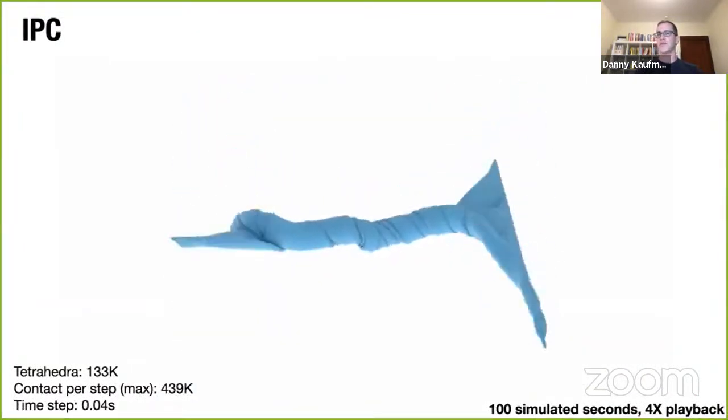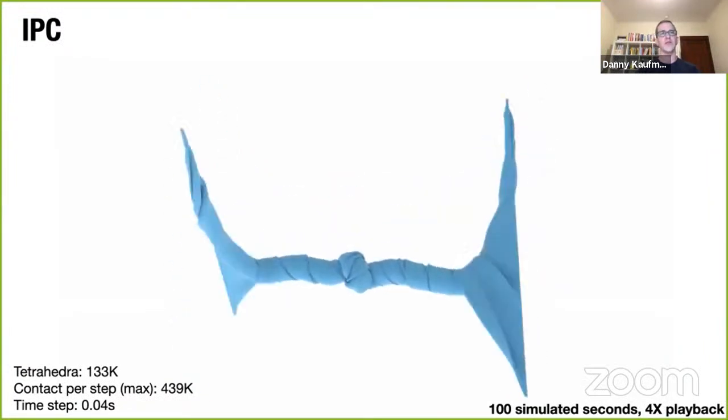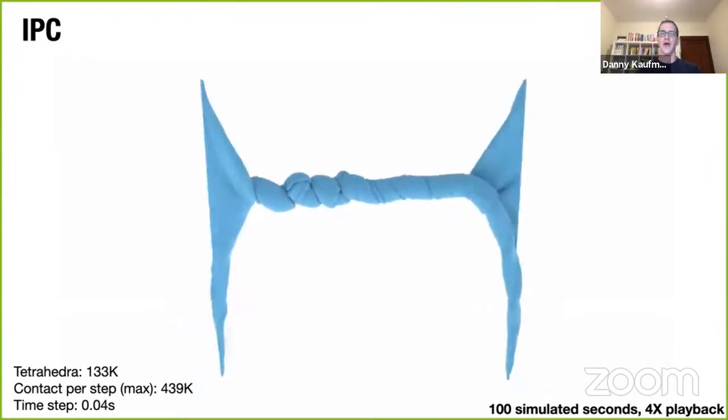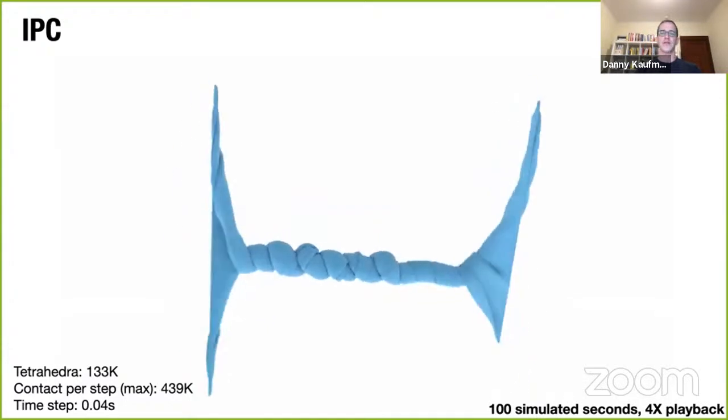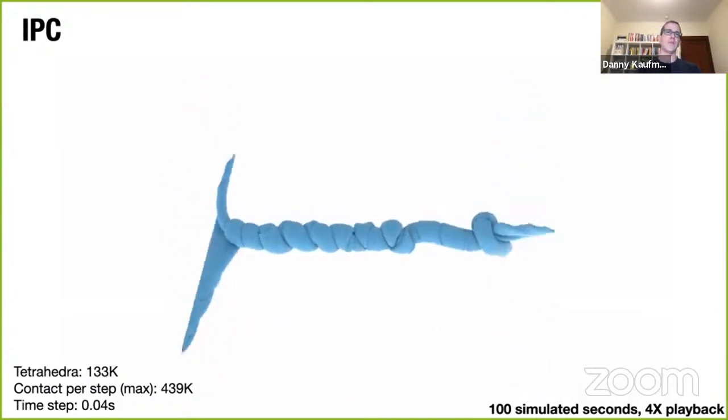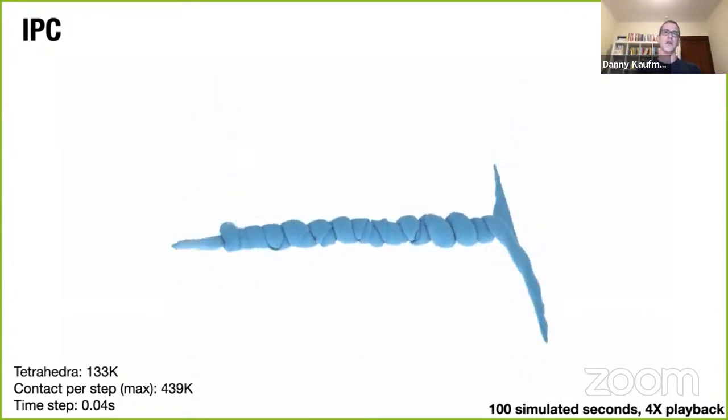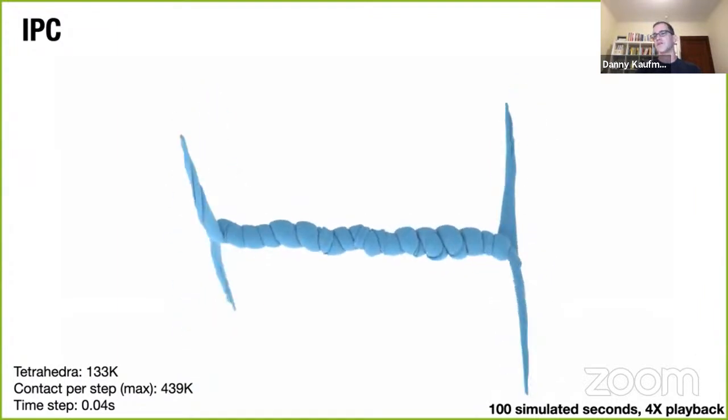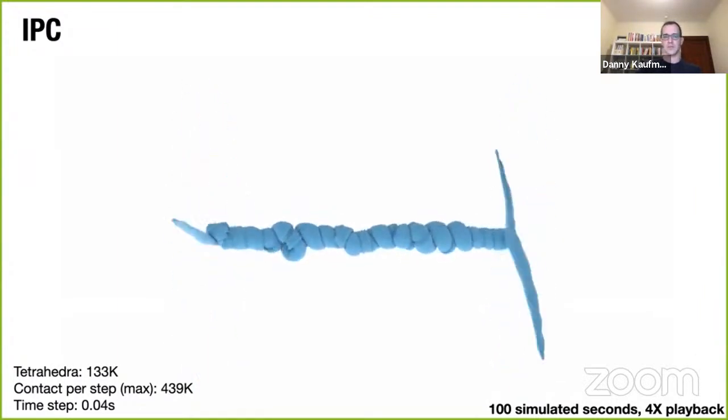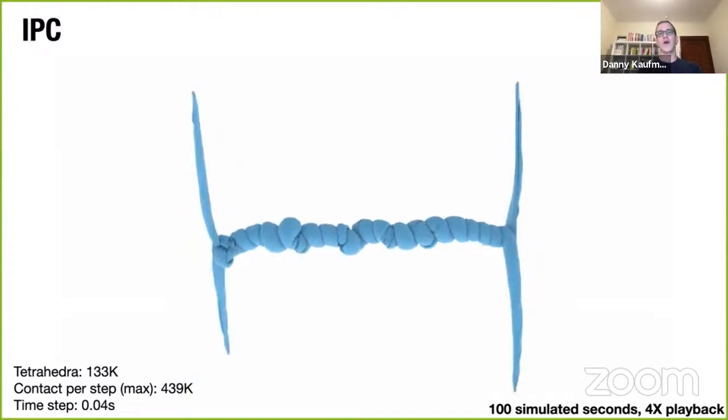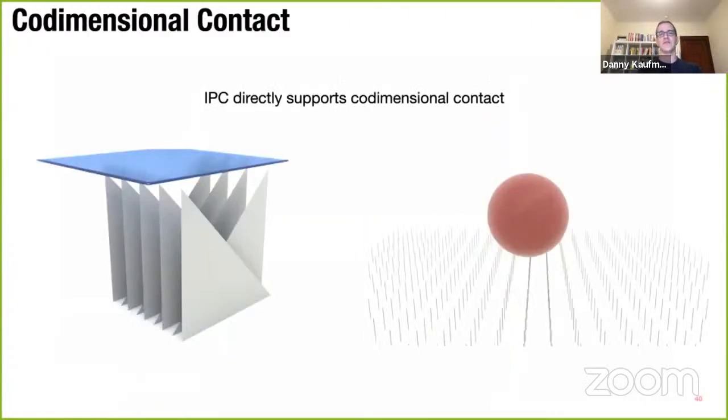So another nice feature of IPC is that we can torture it with extreme boundary conditions, while it's free to pretty much take as large a time step as we want. So here, we're simulating this long-term twisting of the cloth mat, and we're doing it with frame rate size time steps. So no sub-stepping at all. We'll get into the question of sub-stepping a little bit in just a minute. This is 100 simulated seconds, we're doing about 4x playback.